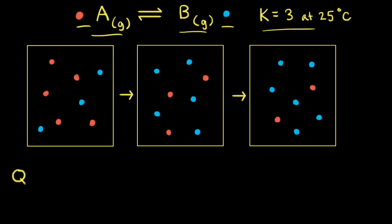Let's start by writing out the expression for the reaction quotient. QC is equal to — and this has the same form as the equilibrium constant expression — so we put the concentration of B to the first power divided by the concentration of A to the first power.